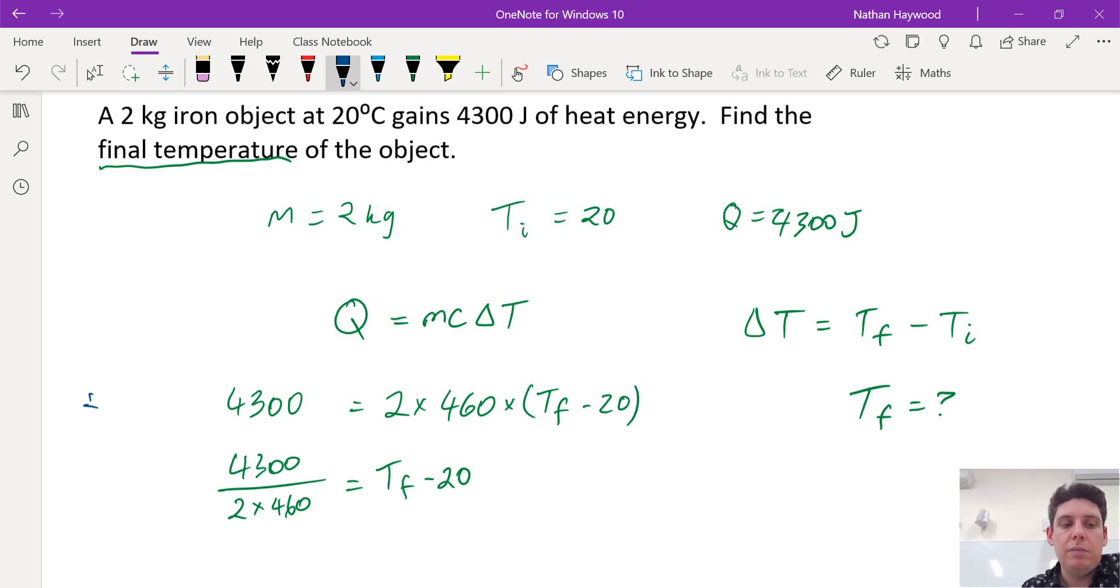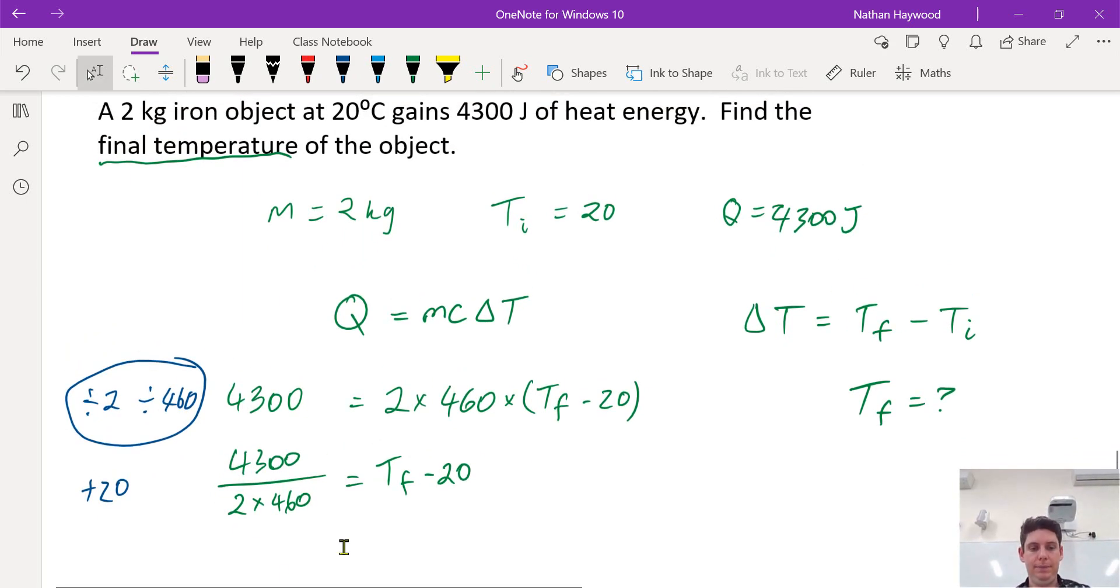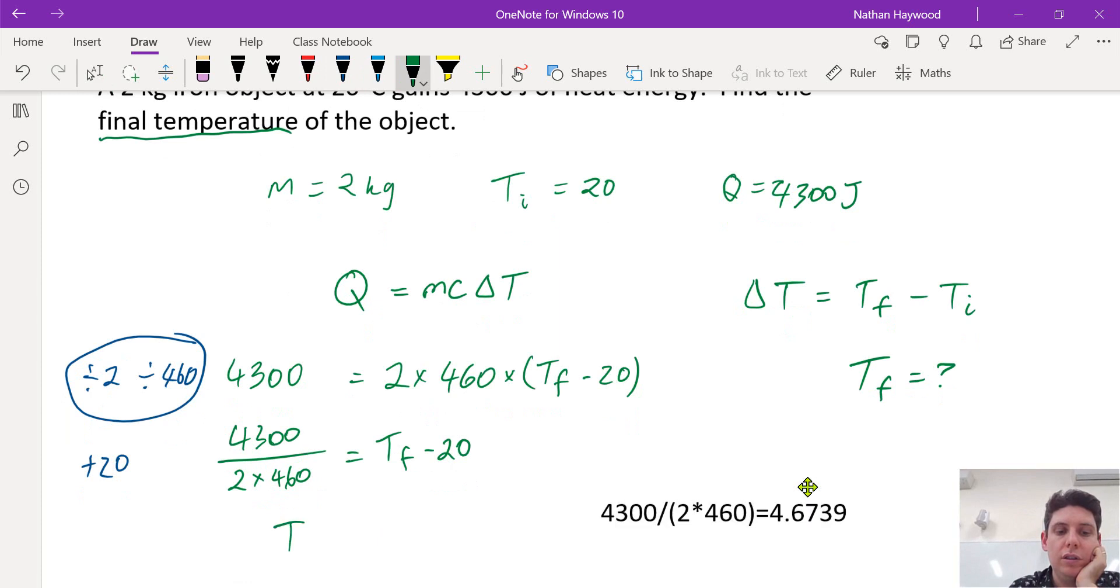And that leaves us with these two. So we divide both sides by 2, both sides by 460. All right, now we're going to add 20 to both sides. And that should give us our final answer for the final temperature. So you should have got Tf is approximately equal to 24.6739 degrees Celsius as the final temperature.